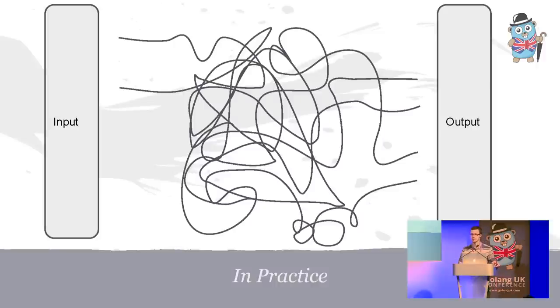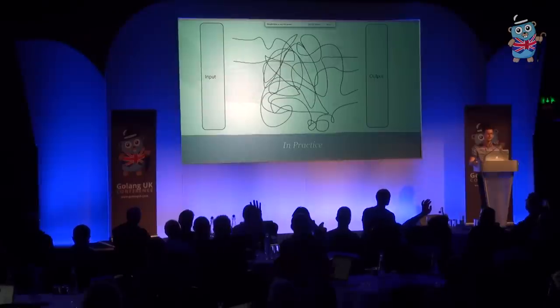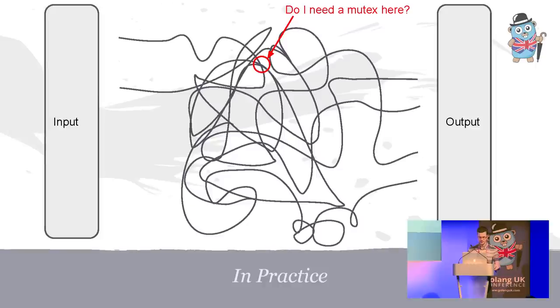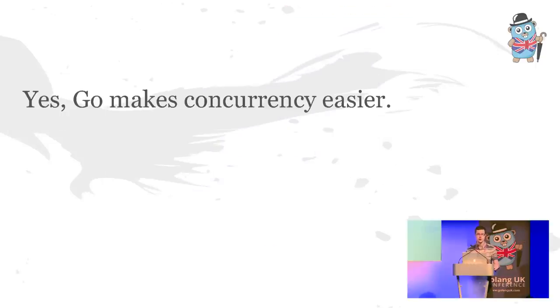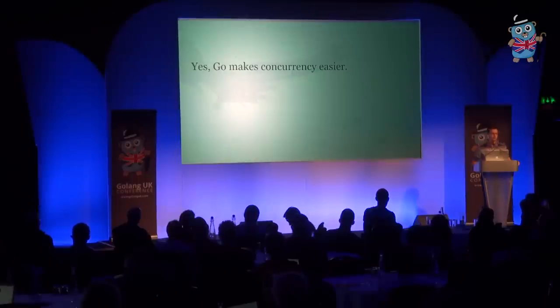Don't get me wrong — Go is a huge step forward. Has anybody here ever tried to use pthreads or one of the older concurrency models? I'll take Go any day of the week. But even with goroutines and channels, when your system is complex, questions can still be hard, and answers are not always obvious. Go makes concurrency easier, a lot easier. It makes it way more accessible to a lot more developers, which is great, but it's still hard.